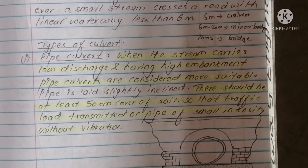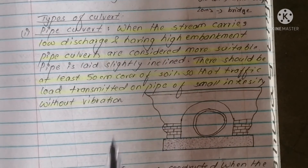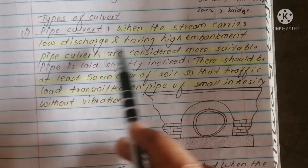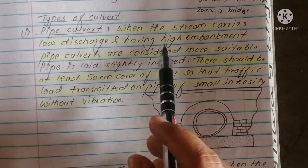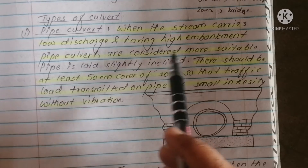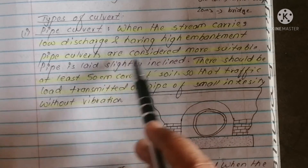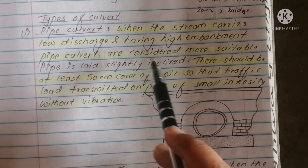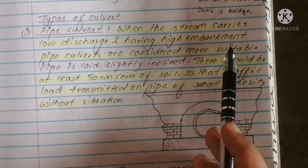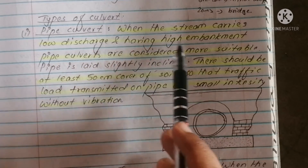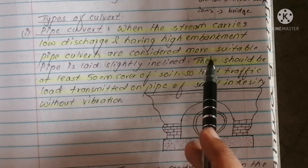The pipe culvert is a type of culvert. When a stream carries low discharge and has a high embankment, pipe culverts are considered more suitable. Low discharge or high embankment — these are the conditions where pipe culverts are generally considered.